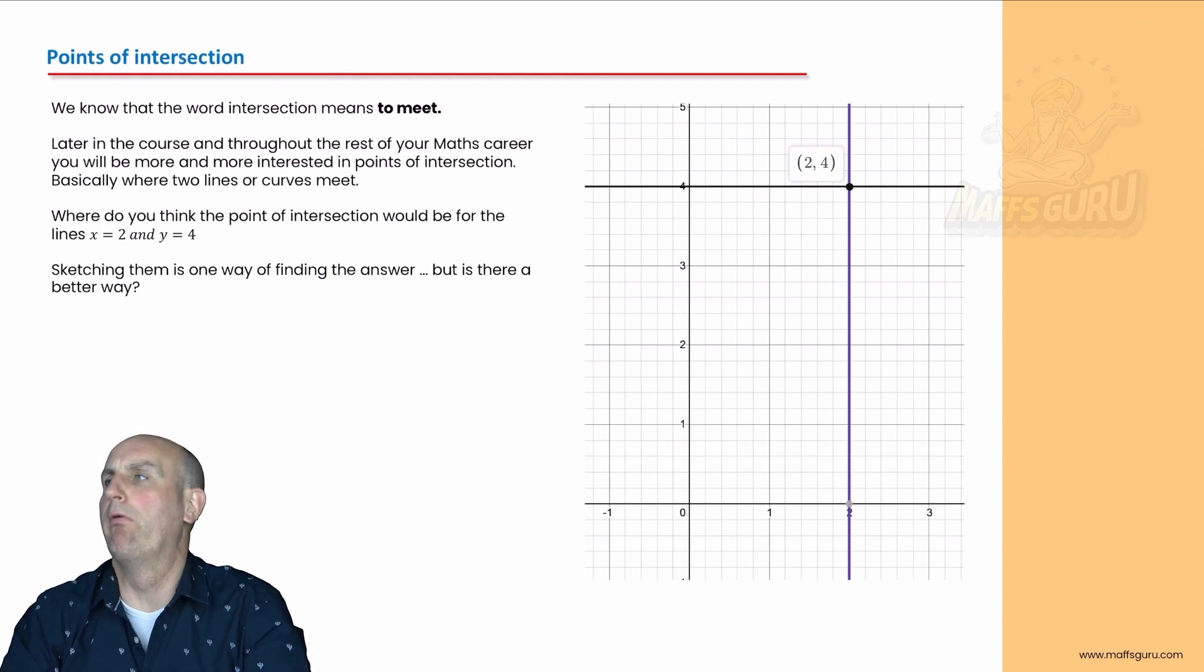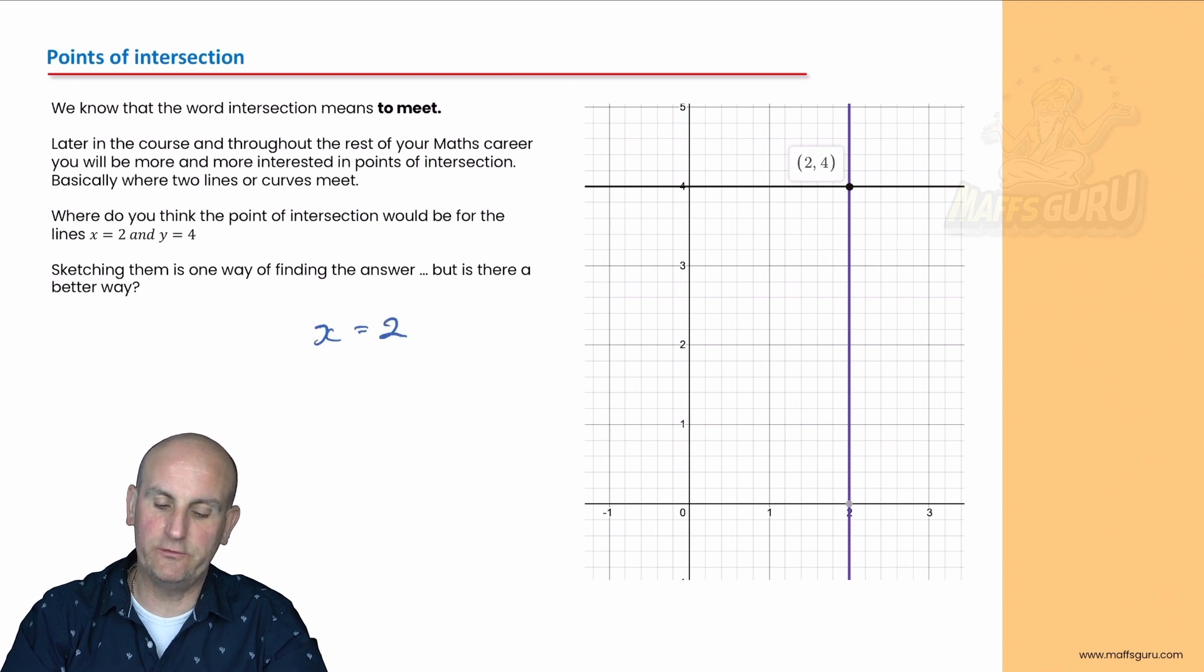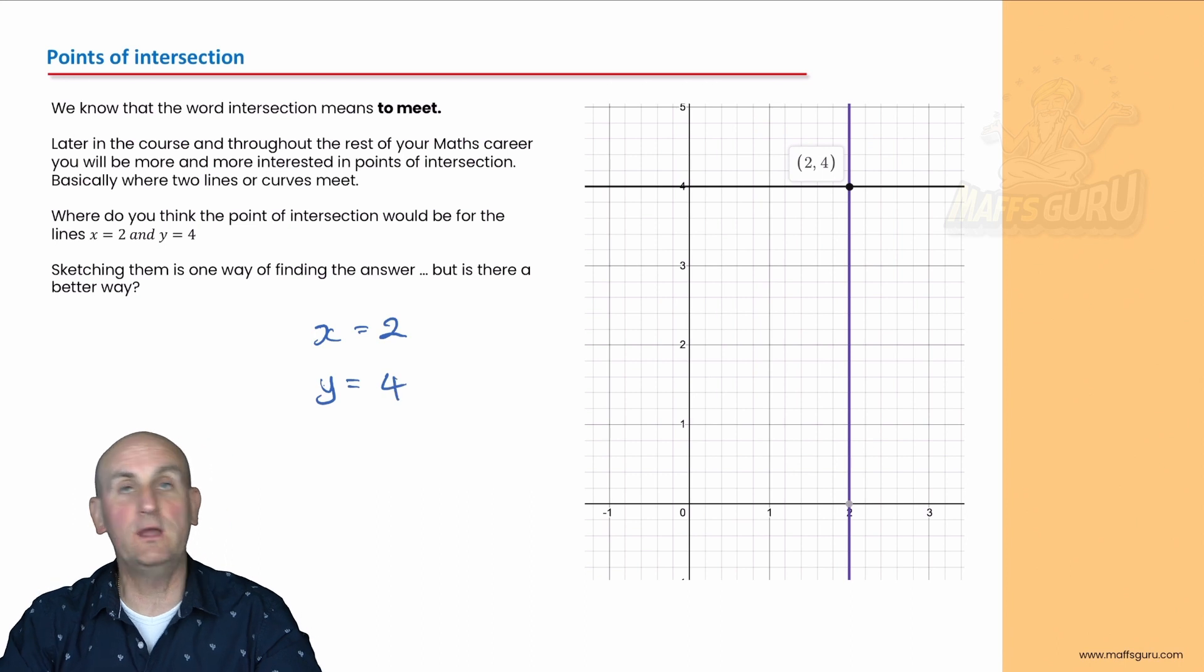We are now looking at intersection. Where do lines intersect? Well they intersect where they meet. I've given you two lines, one line is x equals 2 and another line is y equals 4. Where do they intersect? Some of you may need to sketch these. You do a quick sketch and you go x equals 2.